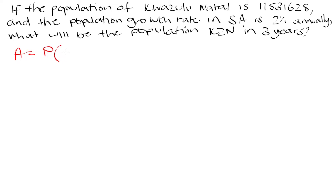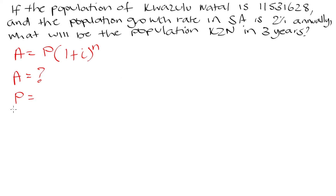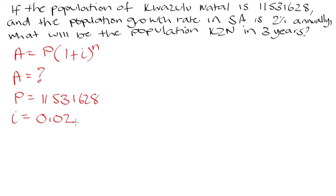The compound interest formula is: A = P × (1 + i)^n. A represents the population three years after — this is what we are looking for. P is the starting population: 11,531,628. i is the population growth rate, which is 2%, expressed as a decimal: 0.02. n is the number of years, which is 3.